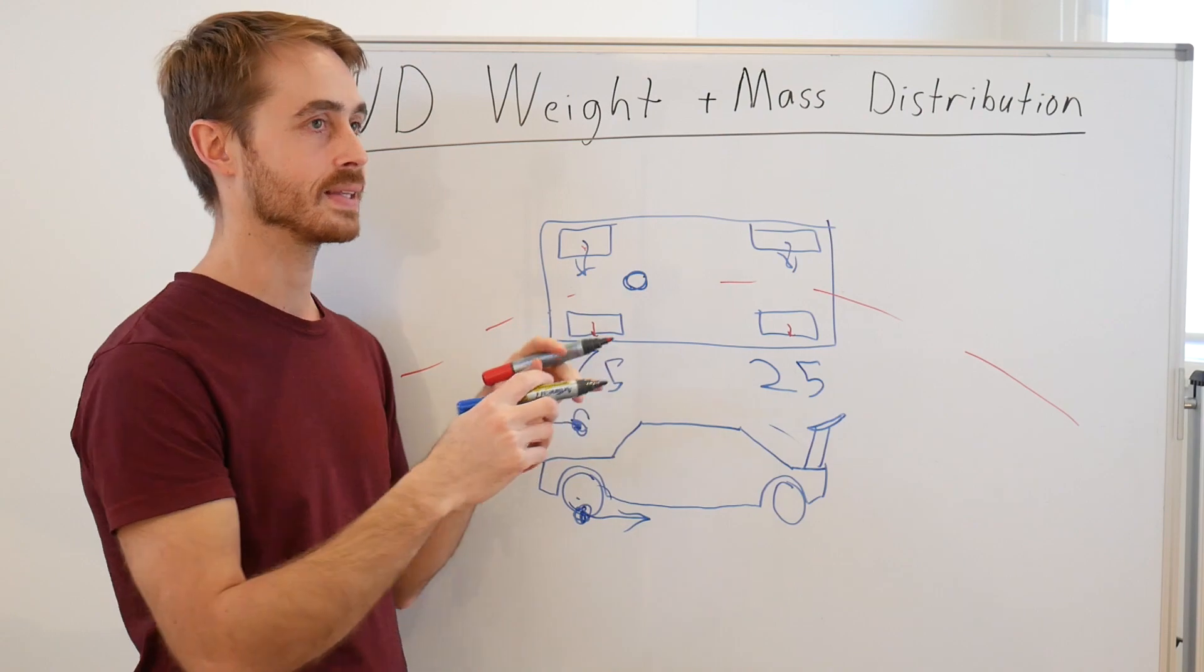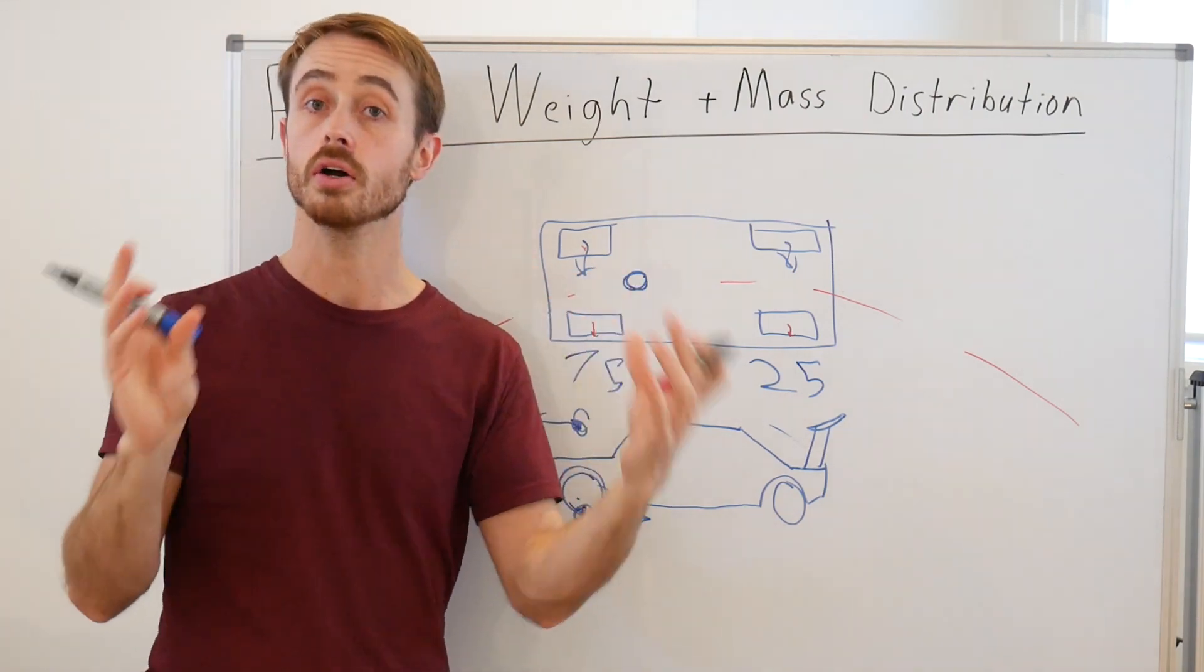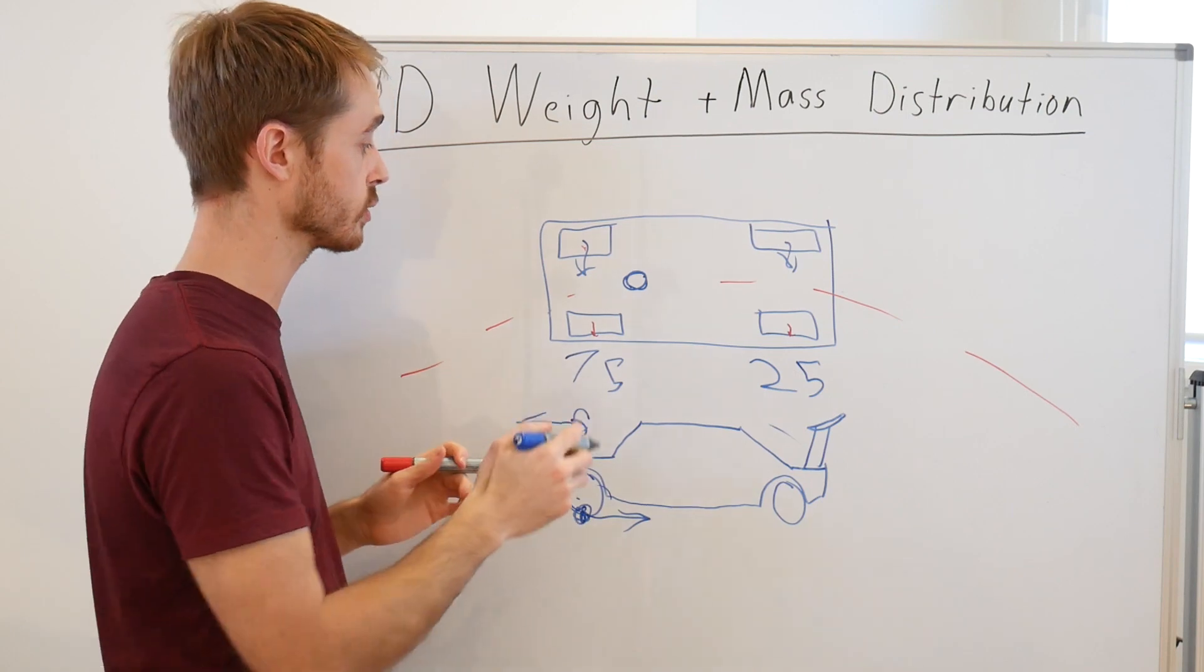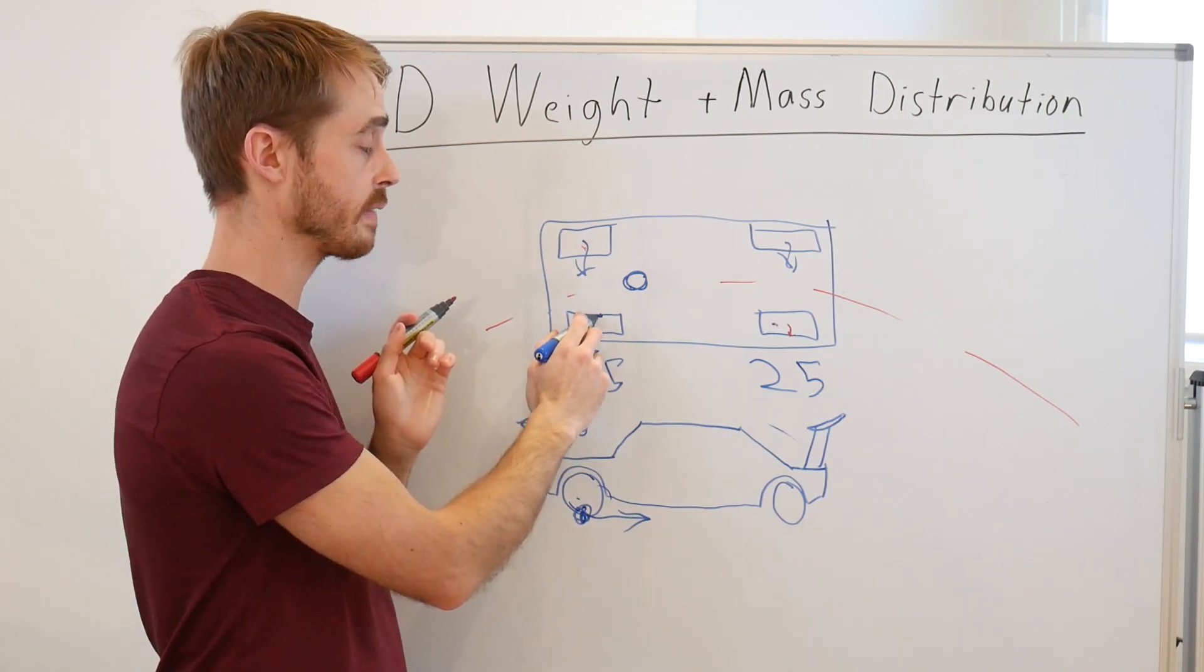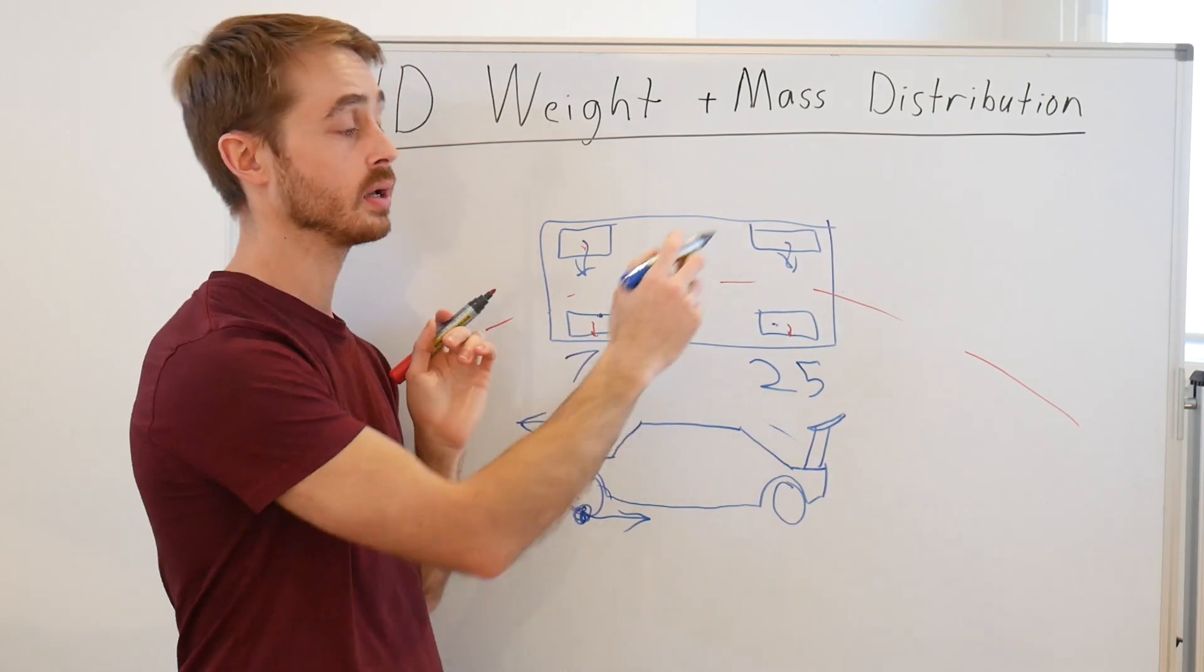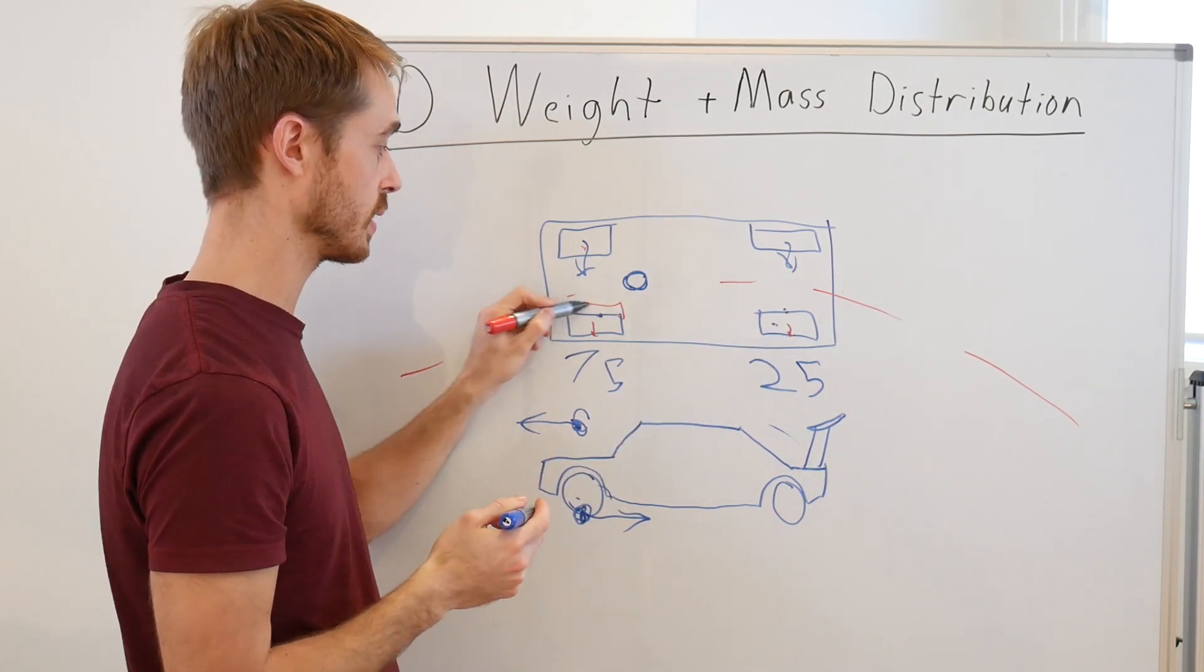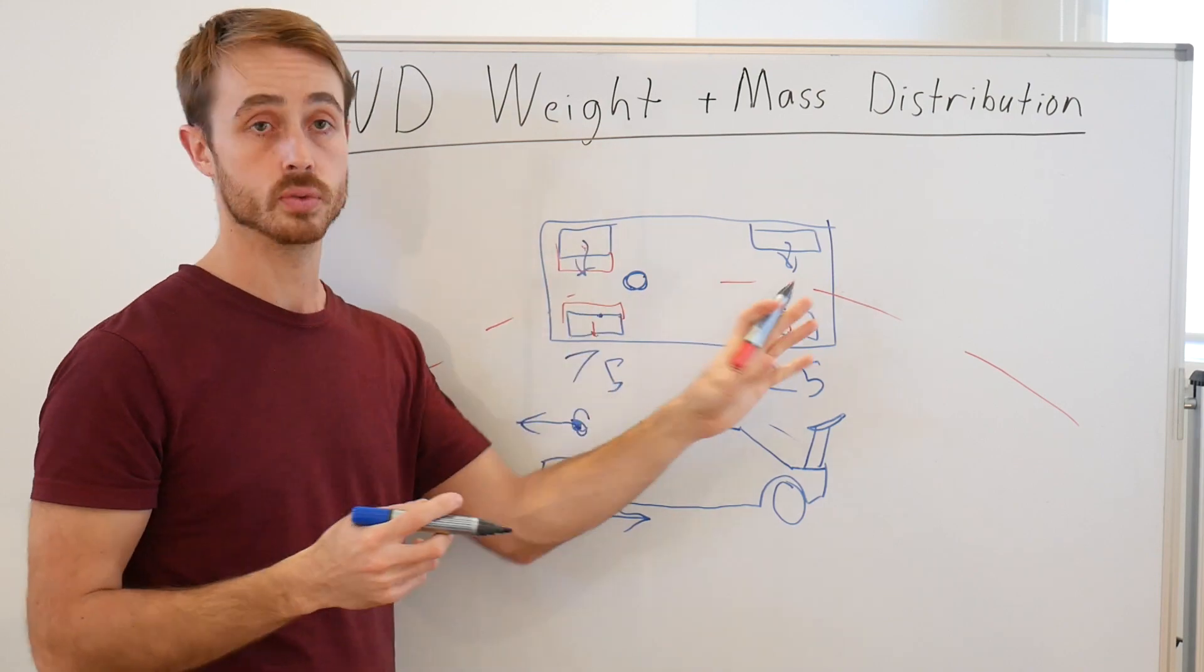What we end up with is, if we were to match our contact patch sizes to our relative weights on the front and rear axles, we end up with this contact patch having to be three times larger than the contact patch here.